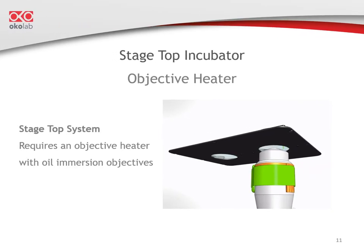When imaging with an oil immersion objective, we recommend using an objective heater — represented here by a heating band in yellow, secured around the objective by a green strap. An oil immersion objective will touch the bottom of the well through the oil and will draw heat away from your sample. This is why an objective heater is recommended.